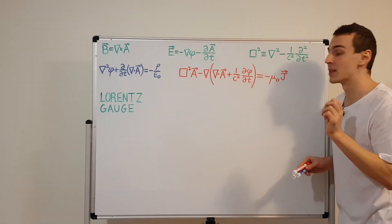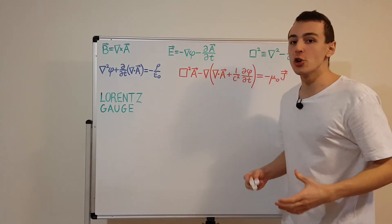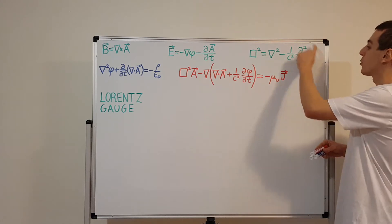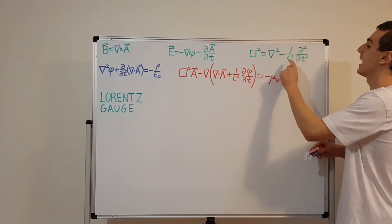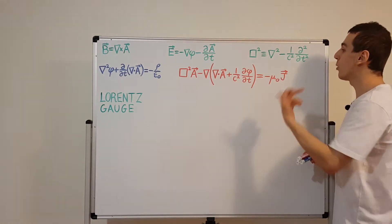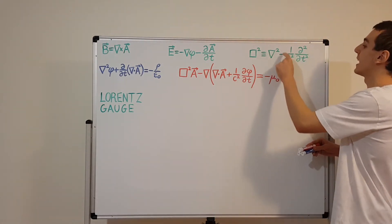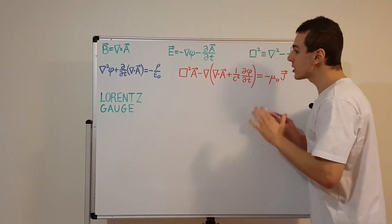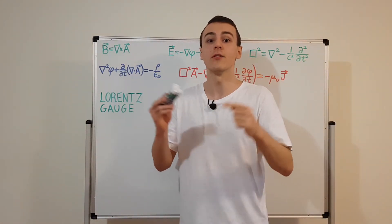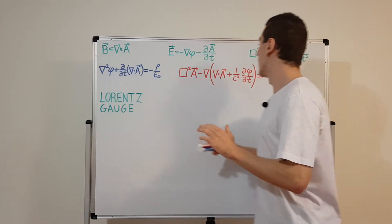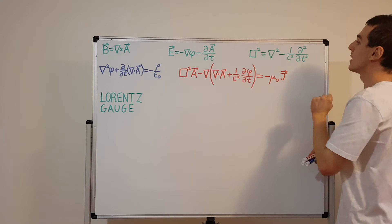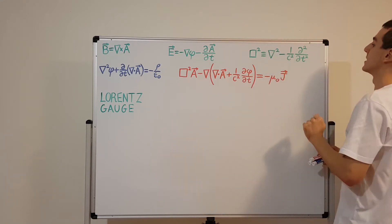You can actually swap the order of the terms as long as you're consistent with the sign convention, which is called the signature of the metric in special relativity. You can choose the temporal component to have a minus sign and the spatial components to have a plus sign, or you can choose the opposite. As long as you're consistent and the temporal and spatial components have opposite signs, you're good. This is just shorthand notation so we don't have to write out the full expression.